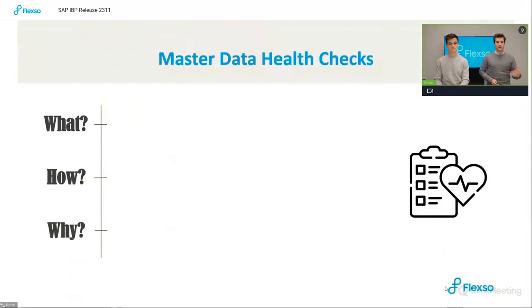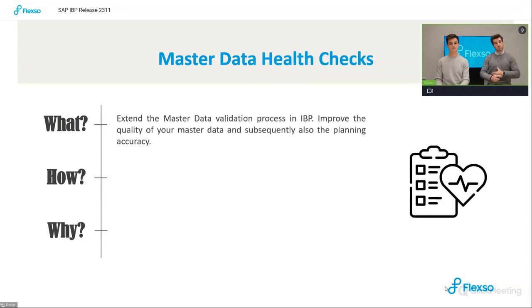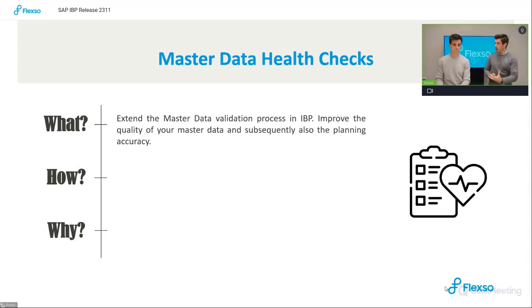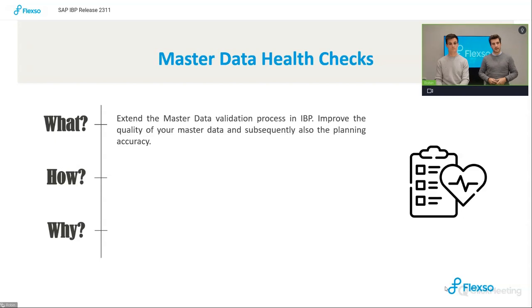Let's take it away with the first topic for today: the master data health check — what it is, how it can be used, and why it should be used. It's an extension to the whole master data validation process in IBP. From previous releases we had detection of outliers in master data, and the opportunity to discover patterns. All kinds of master data machine learning algorithms have been introduced to improve master data quality.